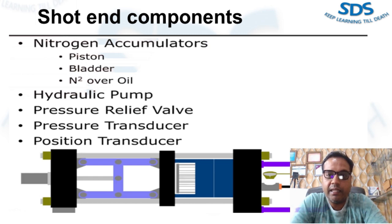Die casting machines control the recharge process during each shot using a pressure relief valve. This pressure relief valve resides between the hydraulic pump and the accumulators.